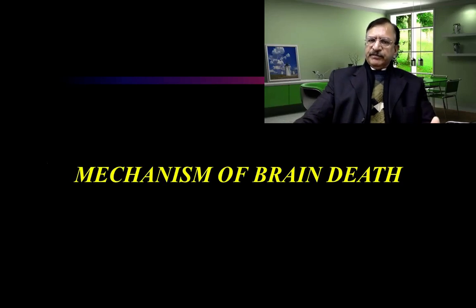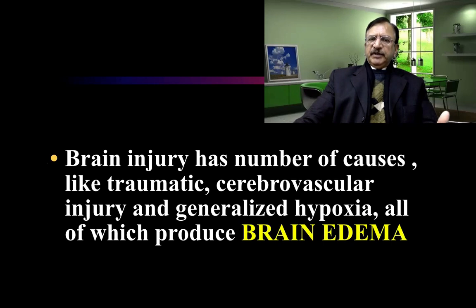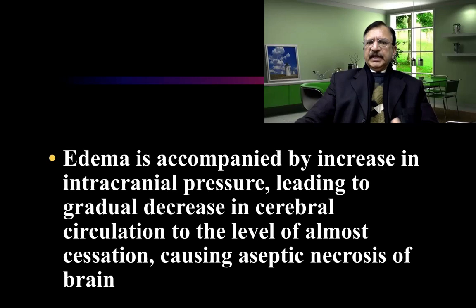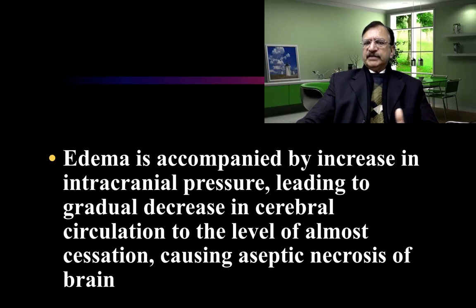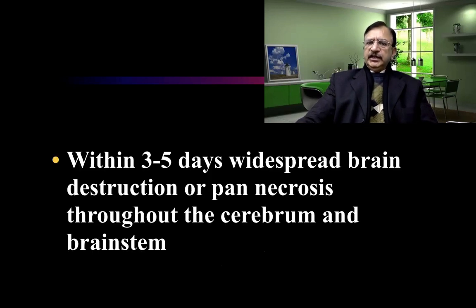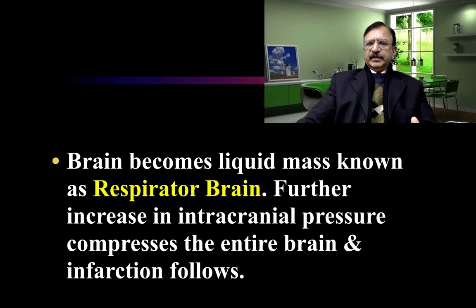The mechanism of brain death: brain injury has several causes — trauma, cerebrovascular accidents, and generalized hypoxia — all producing brain edema. Edema is accompanied by increased intracranial pressure, leading to gradual decrease in cerebral circulation to the point of almost complete cessation, causing aseptic necrosis of the brain. Within three to five days there is widespread brain destruction and pan-necrosis throughout the cerebrum and brainstem. The brain becomes a liquid mass, known as a respirator brain.